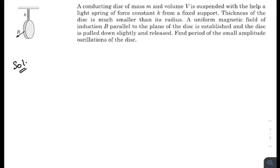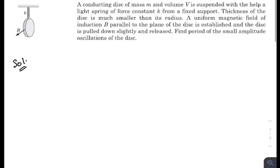Let's go through the question very quickly. There's a conducting disk of mass m and volume V suspended with the help of a light spring of force constant k from a fixed support. As you can see in the diagram, thickness of the disk is much smaller than its radius. A uniform magnetic field of induction B parallel to the plane of the disk is established, and the disk is pulled down slightly and released. Find the period of the small amplitude oscillation of the disk.